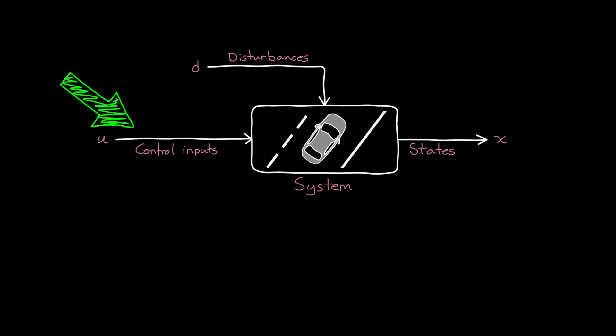There are the control inputs, U, that we intentionally use to affect the system. For a car, these are things like moving the steering wheel and hitting the brake and pressing on the accelerator pedal. And then there are unintentional inputs. These are the disturbances, D. And they are forces that we don't want affecting the system, but they do anyway. These are things like wind and bumps in the road.